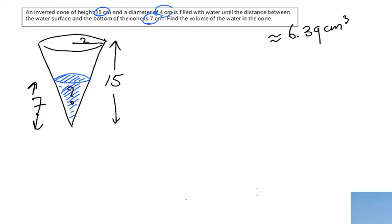But then again, I promised you to use a different method now. So what am I going to do? I'm going to find the radius of the water. And again, I'm going to use similarity for that. So the scale factor is 7 over 15. If I multiply that by 2, which is the radius of the bigger cone, then the radius of the smaller cone is 14 over 15 cm.